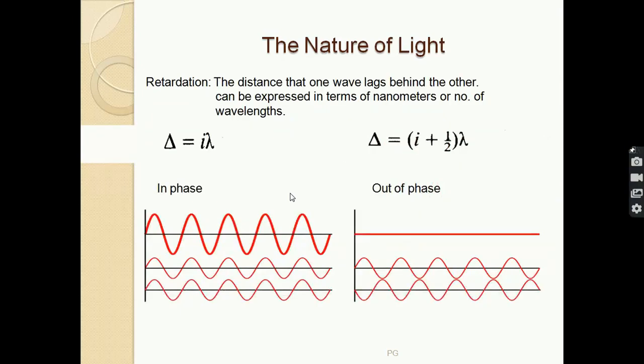There are two types of interference, and this can be described by the parameter called retardation. What is retardation? Retardation is the distance that one wave lags behind the other. Like in this case, these are the two waves, so the distance one wave is lagging behind the other is called the retardation. This retardation can be expressed in terms of nanometers or number of wavelengths. So the retardation Δ = iλ. If i is an integer, two waves are said to be in phase, and if it is one and a half, two and a half, three and a half, they are out of phase. When the waves are in phase and they superimpose, they form constructive interference - the amplitude is the sum of the two and the resultant wave has a higher amplitude than both waves.